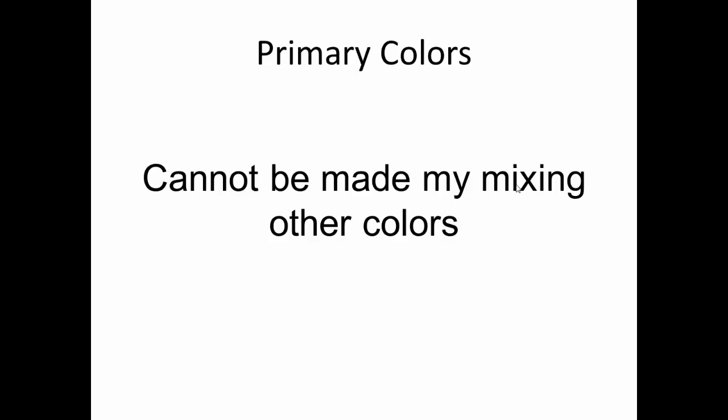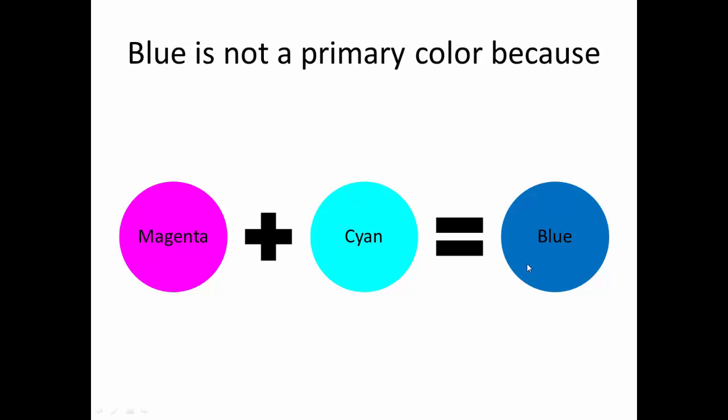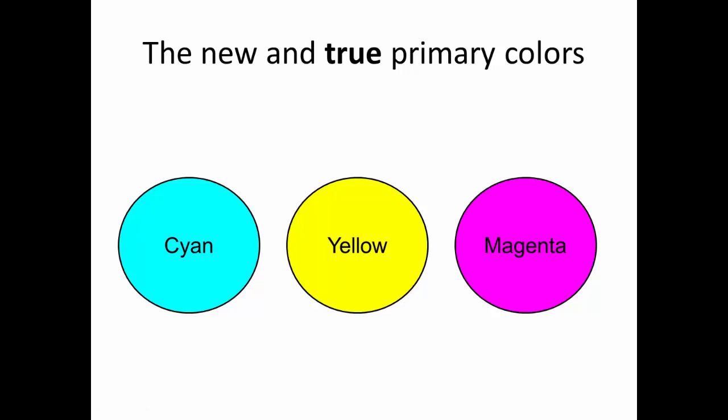Primary colors cannot be made by mixing other colors. That is the definition. Thus, red is not a primary color because yellow plus magenta gives you red. And blue is not a primary color because magenta plus cyan equals blue. The new and true primary colors are cyan, yellow and magenta.